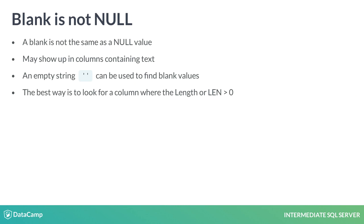Note that there is a difference between a blank value and a null value. Sometimes, missing values may be formatted as blanks. A blank is two single quotes with no space in between and is only found in a text field. An empty row value will show up as a blank in your query — it does not contain a value, but it will not show up as null. The best way to find if a column contains a blank value is to look for a column where the length, represented as LEN, is greater than 0.